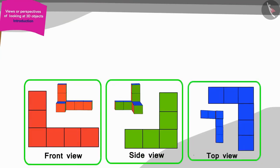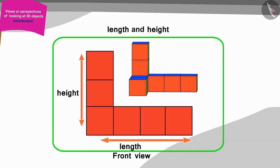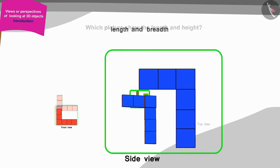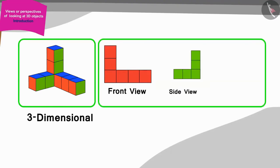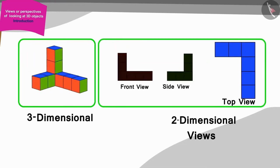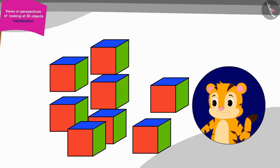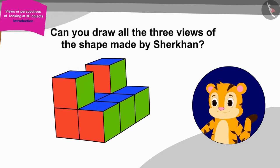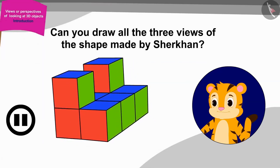Children, can you tell by looking at which of these pictures you can find out the length and height of Golu's shape? That's correct, from this picture. And from which picture can we find the length and breadth? That's right, from this picture. In this way, children can see three-dimensional objects from any two-dimensional view: top view, front view, side view. Now it was Shere Khan's turn to make shapes from the boxes. Shere Khan created such a shape. Can you draw all the three views of the shape made by Shere Khan? You can stop the video and find the answer.